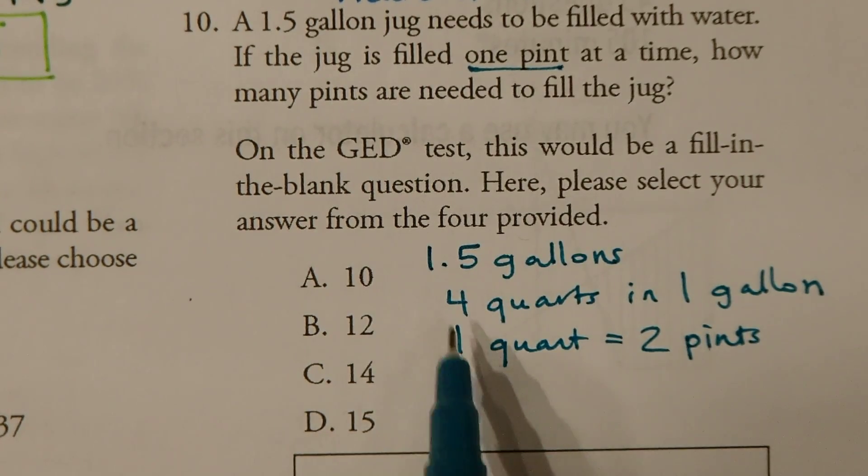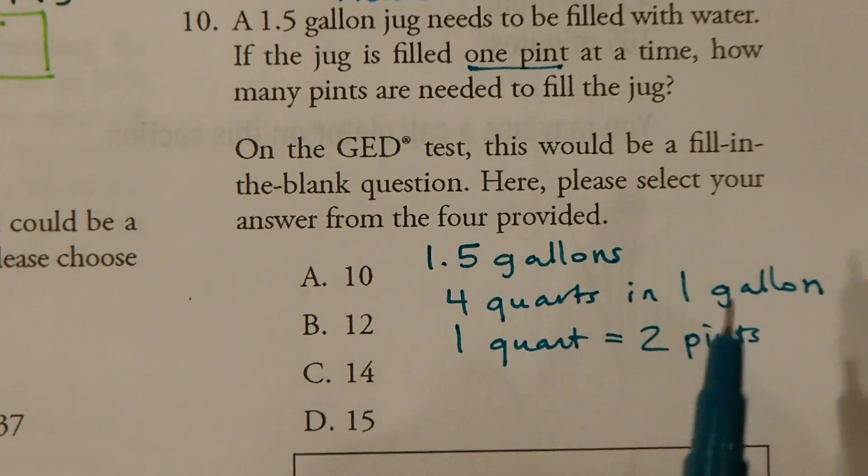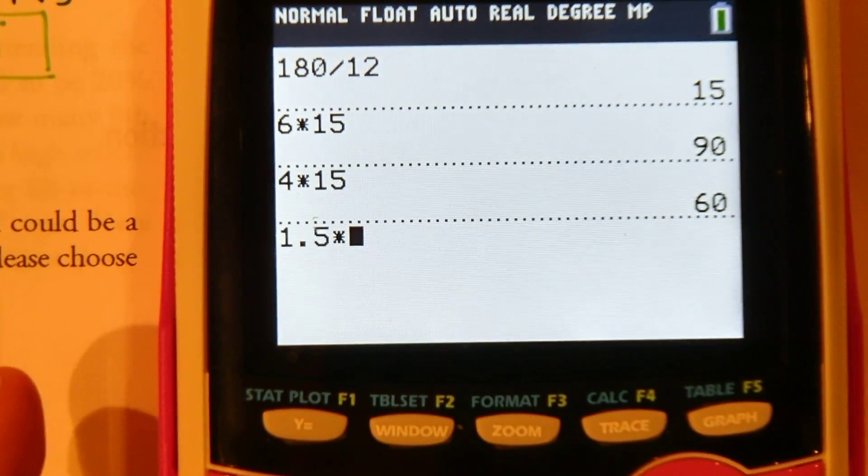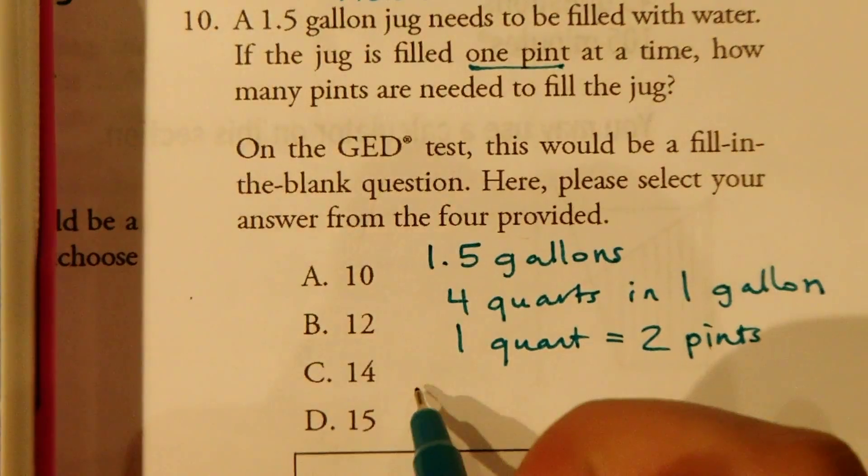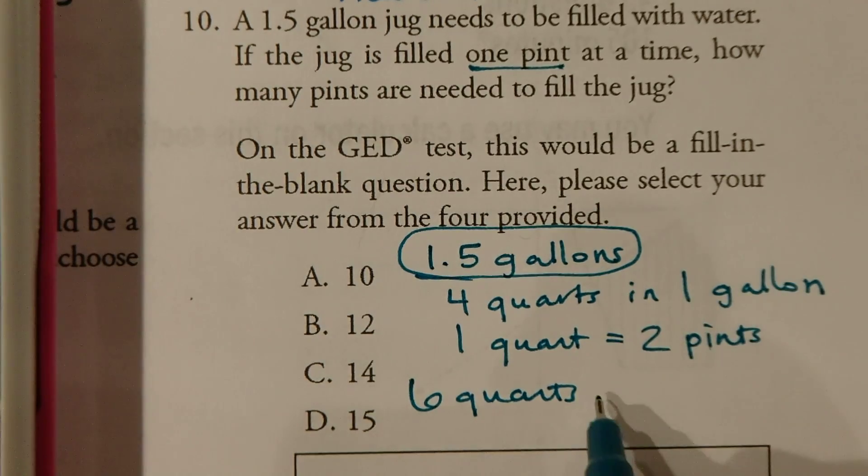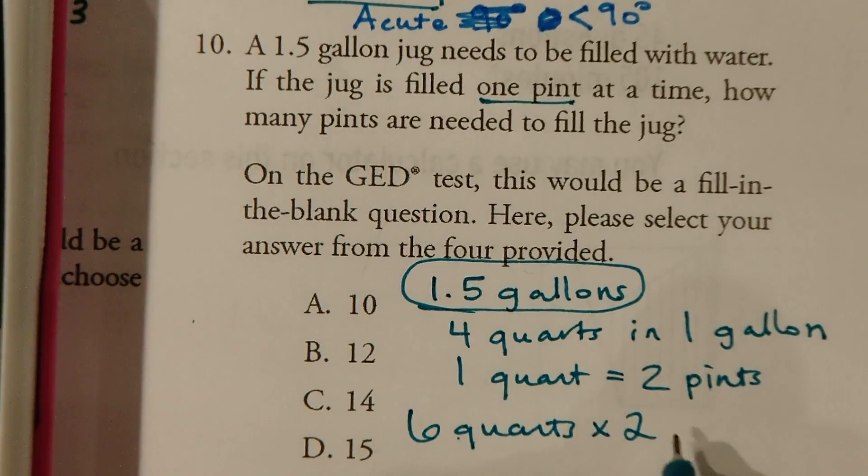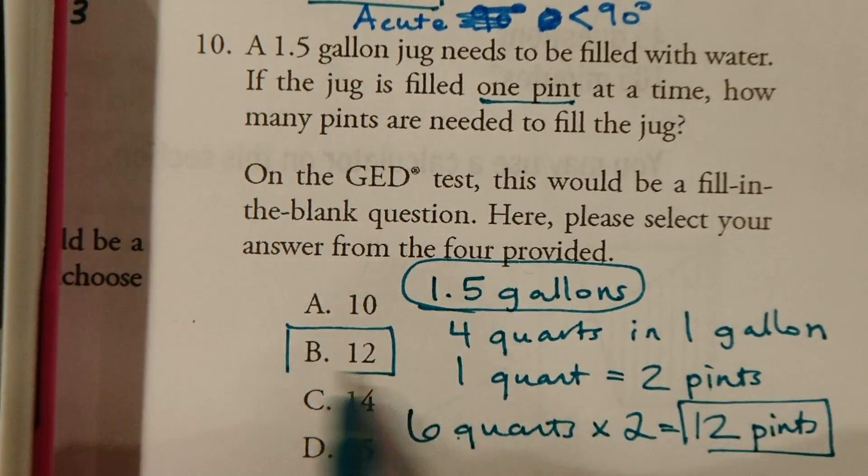So we'll say 1.5 gallons times four quarts. That'll give us the total amount in quarts. So 1.5 times four quarts in each one of those equals six quarts in the 1.5 gallons. We multiplied it times four per gallon. Now we're going to multiply the quarts by two, because one quart is equal to two pints. So each one of these quarts is going to have two pints in it. So that will equal 12 pints. That'll be our answer B, 12 pints.